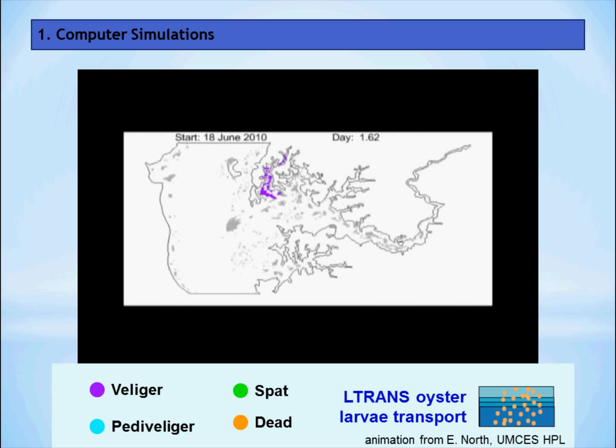Here's a map of the Choptank River with the Harris Creek Sanctuary oyster reefs highlighted in purple. With a computer simulation called an oyster larval transport model, we use the circulation patterns of the river to predict where the oyster larvae are going to go.